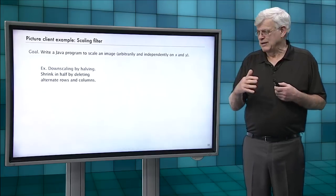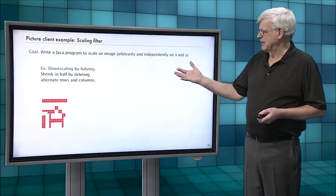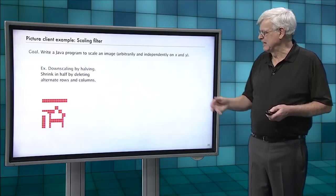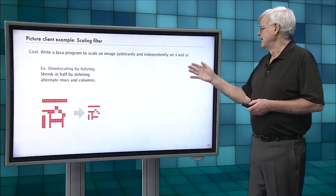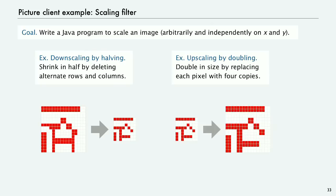Now, for example, let's say you had to cut it in half. So one way to do it is to just downscale by just deleting alternate rows and columns. So in that example, you're going to lose some detail when the picture isn't big enough. But anyway, that's an option. Or you can upscale by doubling. So that's to make a picture twice as big, just replace each pixel with four copies of itself.